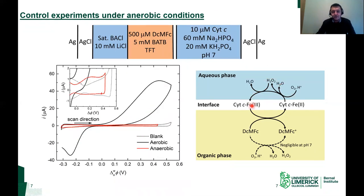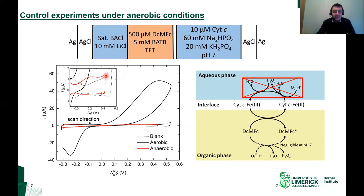As a control experiment, we repeated the experiment under anaerobic conditions — with the sacrificial oxidant present but oxygen removed. By removing oxygen, we eliminate the ability to do interfacial redox electrocatalysis. Cytochrome C can be reduced by decamethylferrocene, but it cannot be regenerated. We see a massive collapse in current in the cyclic voltammogram. Zooming in on the inset, there is a relatively reversible electron transfer between decamethylferrocene and cytochrome C, but no regeneration and no catalytic wave. This confirms that oxygen is definitely involved in our electrochemical response.